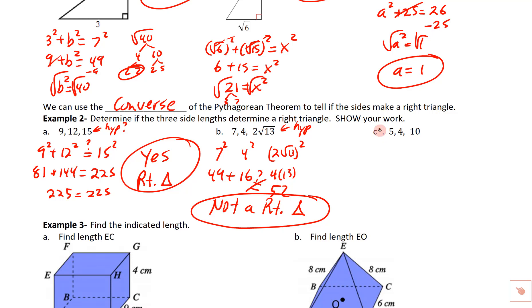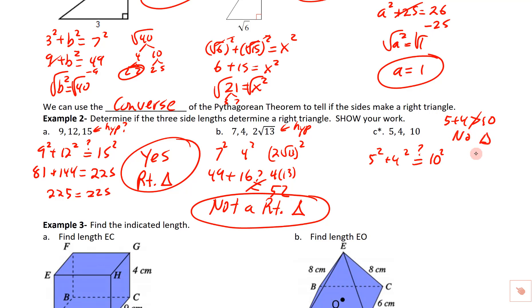There's an asterisk on this set of sides — 5, 4, and 10 — for a good reason. Before checking whether it's a right triangle, we need to verify these sides can even form a triangle. The triangle inequality states that the two shorter sides must add up to be longer than the longest side. Here, 5 plus 4 is 9, which is not greater than 10, so these sides don't even form a triangle at all — let alone a right triangle.